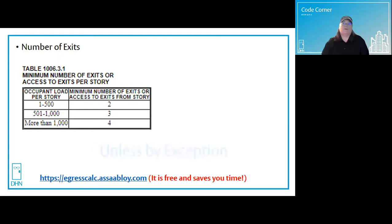But remember, the IBC is an exceptional code, and there are many, many exceptions that do allow for one exit or exit access. That will depend on the occupancy type, common path of travel, and whether the building has a full sprinkler system, among other things.